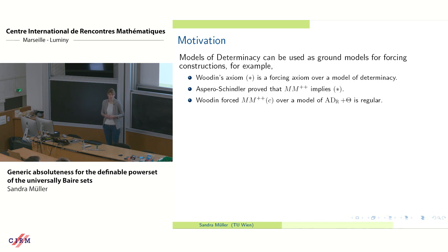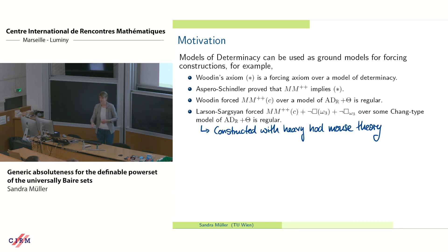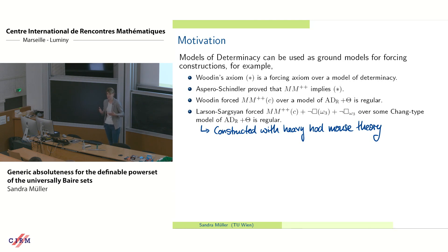Why is it nice to force over models of determinacy? Well, Woodin for example forced MM plus plus C over a model of ADR plus theta as regular — that's a very strong model of determinacy. And even nicer results have been produced: Grigor Sargsyan together with Paul Larson showed — this was mentioned by Grigor yesterday — that you can force the failure of squares plus MM plus plus C over some Chang-type model, which is also a model of ADR plus theta as regular. Now comes the catch: how do you get this model? The model they used was constructed using very heavy inner model theoretic machinery — so-called hot mice.